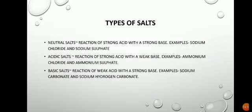Salts are of three types: neutral salt, acidic salt, and basic salt. Neutral salts are those which form a neutral solution when dissolved in water. You can confirm this using an indicator or litmus test — there will be no change in color. Salts formed by the neutralization of a strong acid and a strong base are called neutral salts. Examples include sodium chloride and sodium sulfate — sodium sulfate is formed by the reaction of sodium hydroxide (strong base) with sulfuric acid (strong acid).